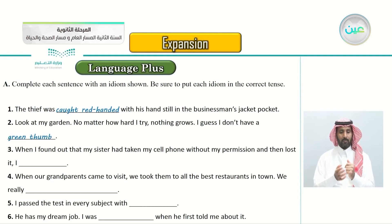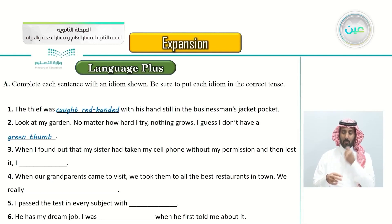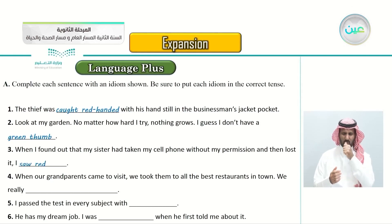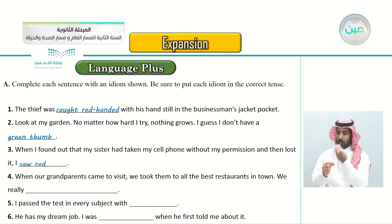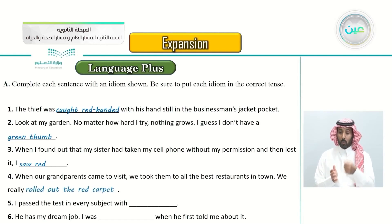Number three: 'When I found out that my sister had taken my cell phone without my permission and then lost it, I ___.' Was I happy or angry? I saw red - I was very angry. Number four: 'When our grandparents came to visit, we took them to all the best restaurants in town. We really ___.' We really rolled out the red carpet.